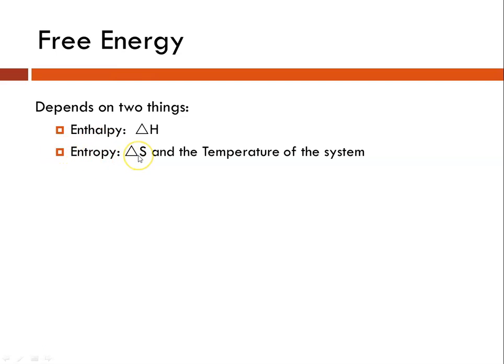And again, entropy is the randomness of a system, and it is dependent on the temperature as well. So the Gibbs free energy is a combination of the enthalpy and the entropy of a system, remembering that entropy is also related to the temperature. Why would entropy be related to temperature?